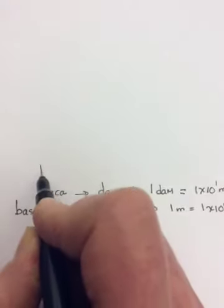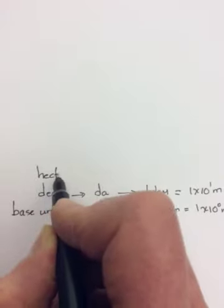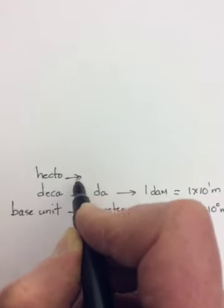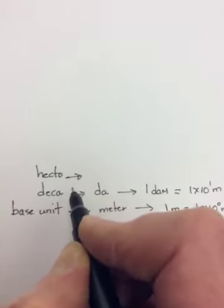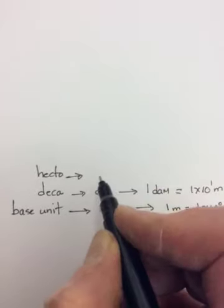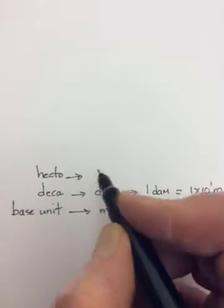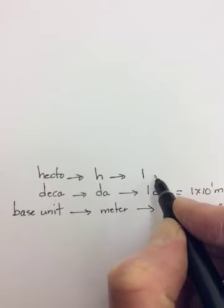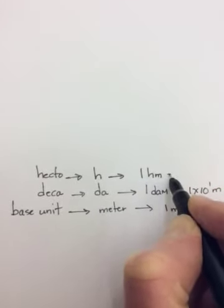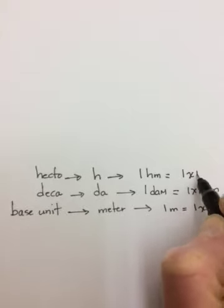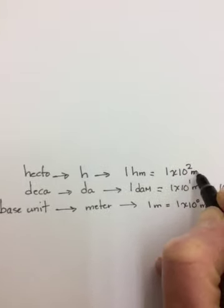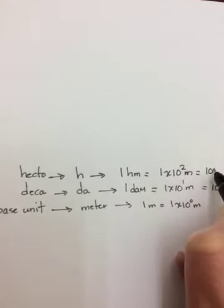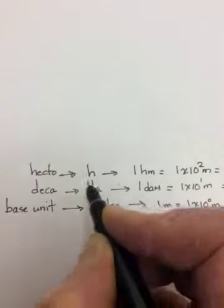Up from deca is called hecto. And the only place I've ever seen this is with land. When we talk about acres or hectares, it comes from this. Its abbreviation is H. And 1 hectometer is equal to 1 times 10 to the 2 meters, in other words, 100 meters.